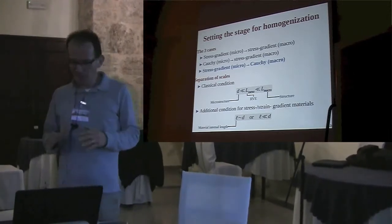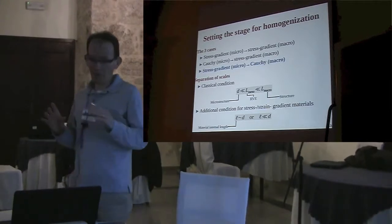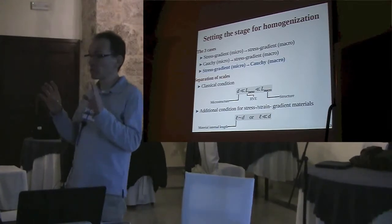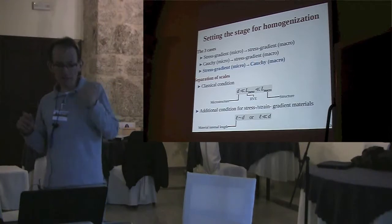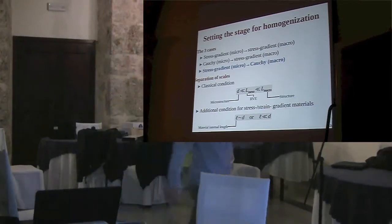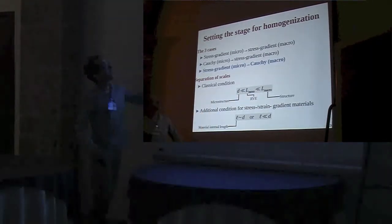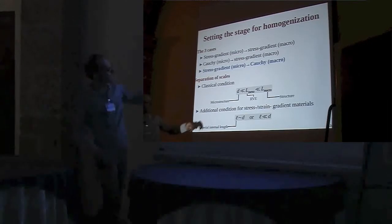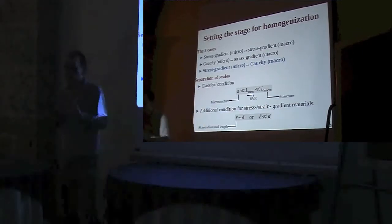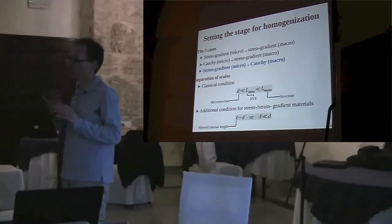When discussing homogenization of materials with internal lengths, we need to complement the classical condition of separation of scales, which relates to geometrical conditions, with a condition relating the material internal length to the geometry of the problem. Depending on where the material internal length L sits relative to the heterogeneity size and macroscopic scale, you end up in different cases. We assume the material internal length is comparable with the heterogeneities, so that once we homogenize we expect a Cauchy material.